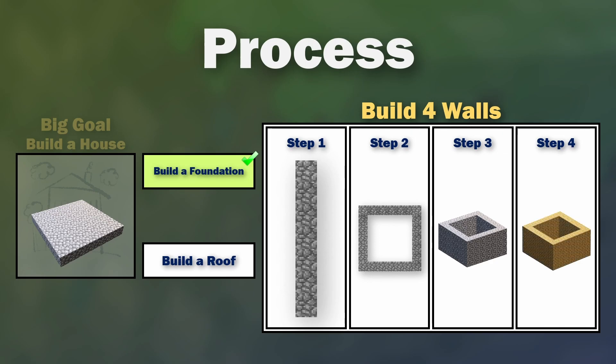We'll add to the code the ability to choose what kind of block we want — whether it's cobblestone, spruce wood, or oak wood planks — it can be any kind of block you want, and we're going to see how to change that in Minecraft MakeCode. So let's jump into Minecraft and have a look.